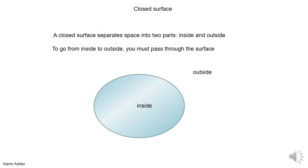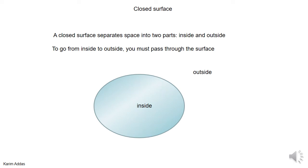We also want to define what a closed surface is. A closed surface, by definition, splits space into two parts — something inside and something outside. If you want to go from outside the surface to inside, or vice versa, you have to pass through the surface. This means a closed surface cannot have any openings; it has to be completely sealed from every side.